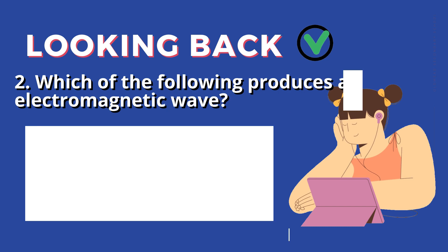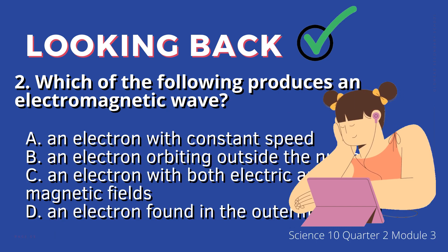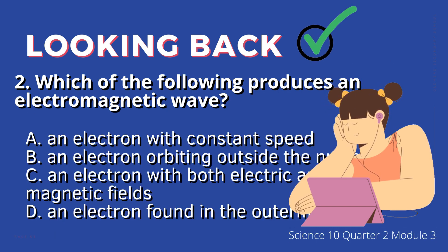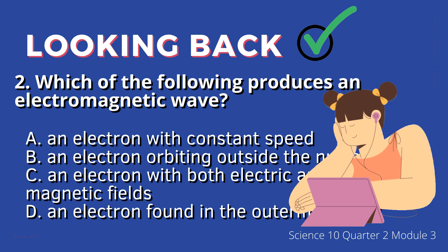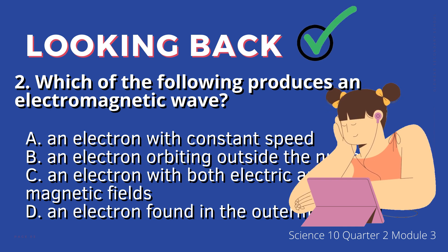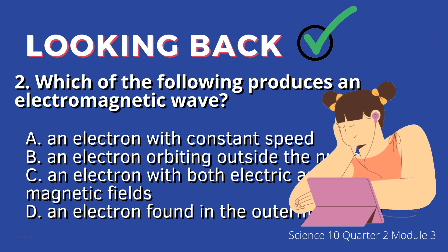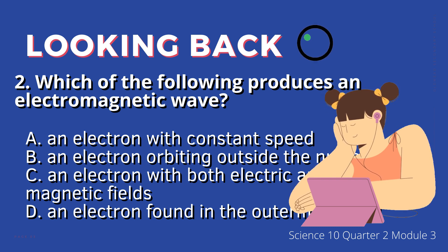2. Which of the following produces an electromagnetic wave? A. An electron with constant speed, B. An electron orbiting outside the nucleus, C. An electron with both electric and magnetic fields, D. An electron found in the outermost shell.